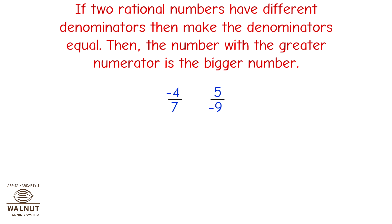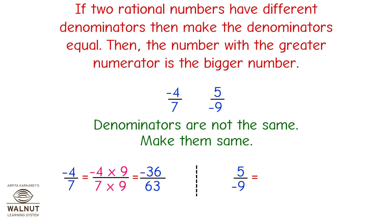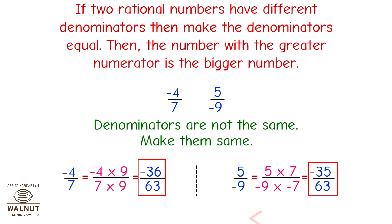Compare minus 4 upon 7 and 5 upon minus 9. Denominators are not the same, so make them the same. Minus 4 upon 7 equals minus 4 × 9 upon 7 × 9, which is equal to minus 36 upon 63. 5 upon minus 9 equals 5 × 7 upon minus 9 × minus 7, which is equal to minus 35 upon 63. So minus 4 upon 7 is less than 5 upon minus 9.